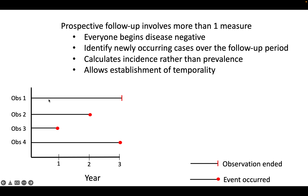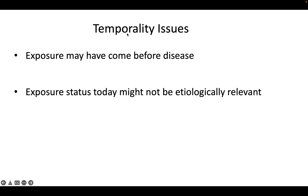We still don't have proof of causation — the classic thought experiment: if the rooster crows every morning and then the sun comes up, you'd observe that time and time again, and could blindly argue that the rooster causes the sunrise. But knowing that the exposure comes first is still a huge step toward establishing causality.